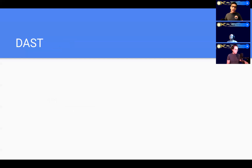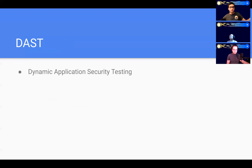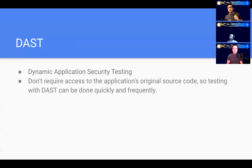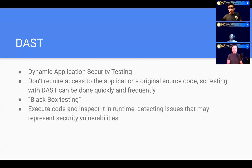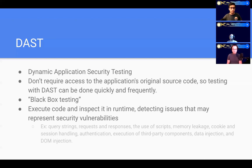So let's move on to DAST. What is DAST? DAST, D-A-S-T, stands for Dynamic Application Security Testing. With DAST, it doesn't require access to the original source code of the application, and testing with DAST tools can be done quickly as well as frequently. It's also known as black box testing, where you're testing runtime issues as well as environmental issues in terms of security.